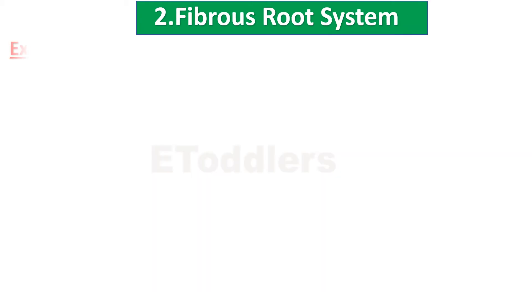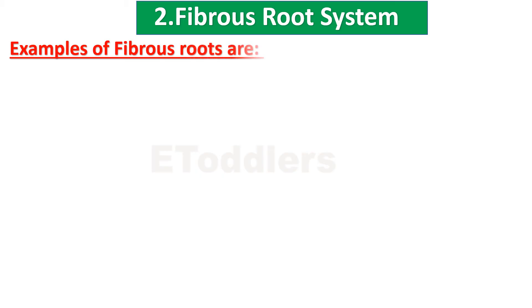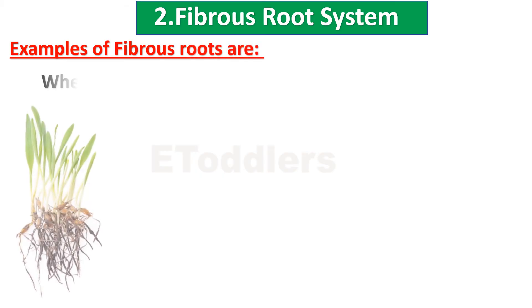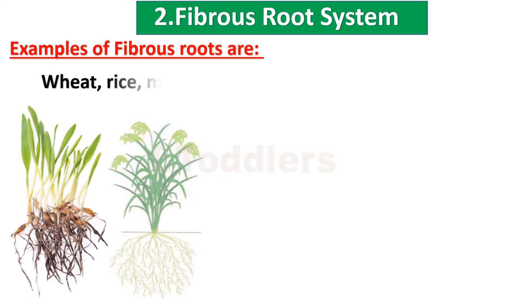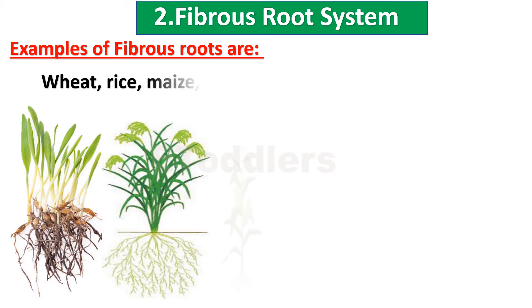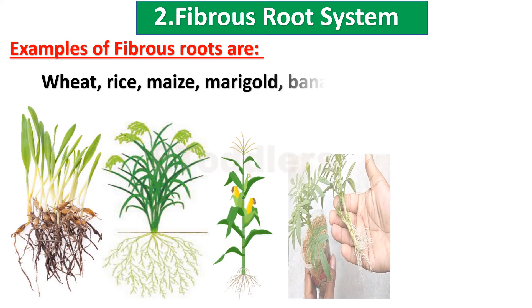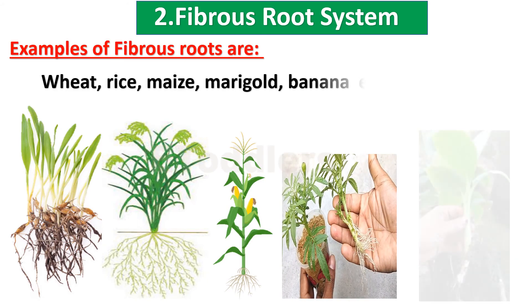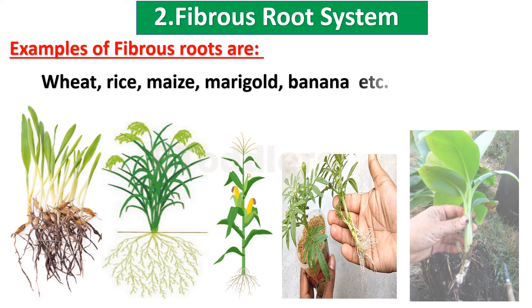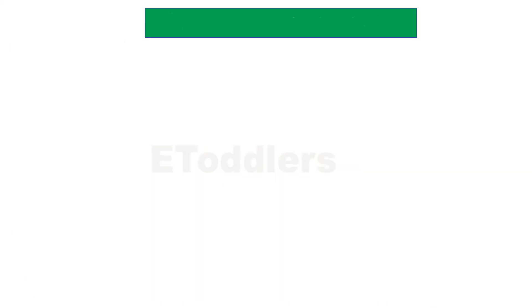Examples of fibrous roots are wheat, rice, maize, marigold, and banana, etc.